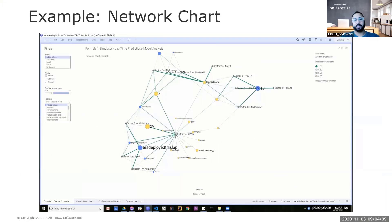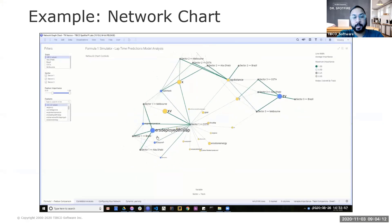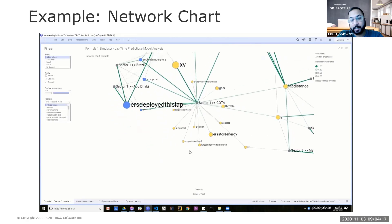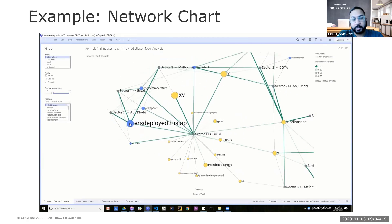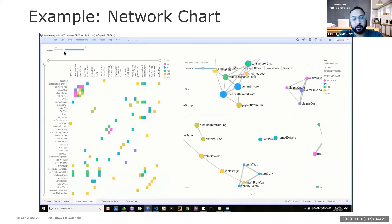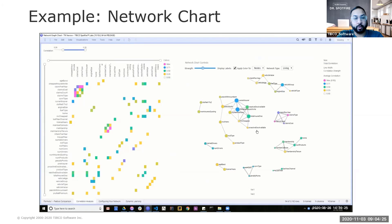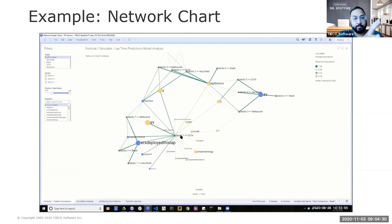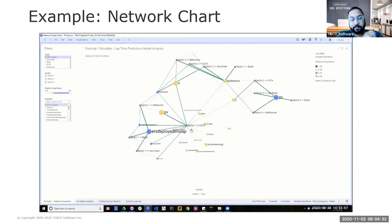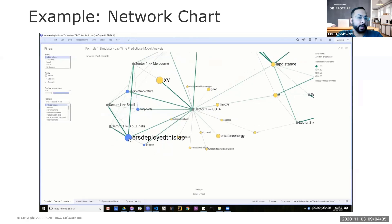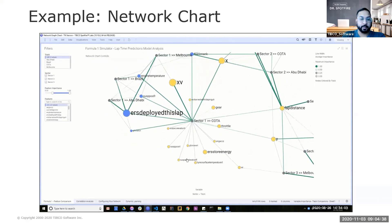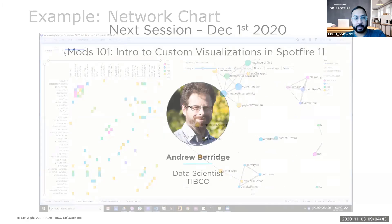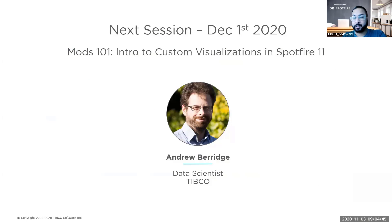An example is this network chart mod done by Colin, looking at variable importance for predicting lap times in an F1 race. There's also a similar network chart used for correlation, seeing how those variables are correlated. This network chart mod is usable just like any other Spotfire chart. It's a really exciting topic we'll get more into next time with a deeper dive. That session will be done by Andrew Barrage on December 1st.